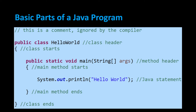At the very top of your program you should have a line of code that looks like this: public class HelloWorld, or the name of whatever your class is called. This is called the class header, and it contains the keywords public and class. The name of your class should start with an uppercase letter, and every subsequent word should also start with an uppercase letter — this is called camelCase. The name of the class should match the name of your .java file.